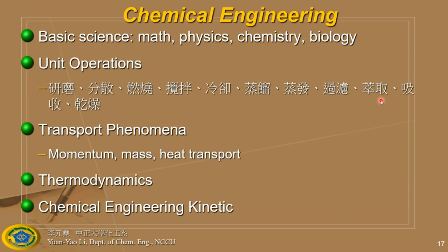What we want to train you for here is mass production — doing things at the scale of tons, in huge quantities. Transfer phenomena means understanding how momentum, mass, and energy work in a process. You also need to know thermodynamics — you'll soon understand why thermodynamics is very important. And you need to know chemical engineering kinetics.